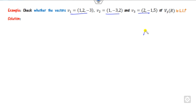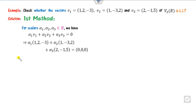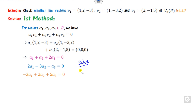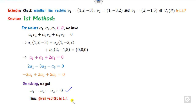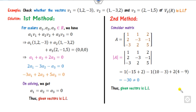Now consider a vector example with three vectors v1, v2, v3 over field R. Using Method 1: take alpha_1, alpha_2, alpha_3 from R, substitute the vectors, equate coefficients of each component, and solve the resulting system. After solving, you get alpha_1 = alpha_2 = 0, so they are LI. Using Method 2: write matrix A with v1, v2, v3 as columns. The determinant is non-zero, confirming LI. Using Method 3: compute the rank of matrix A using row operations (R2 minus ..., R3 plus R2). The rank equals 3 = n, confirming LI.